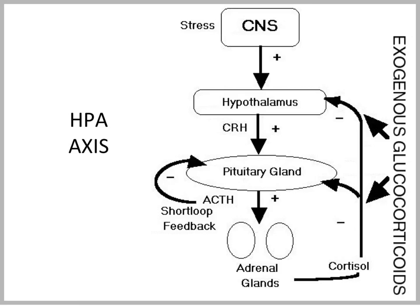The hypothalamus produces the peptide corticotrophin-releasing hormone, CRH, which has a positive effect on the pituitary gland with regards to its secretion of the peptide ACTH, adrenocorticotrophic hormone. ACTH has a positive effect on the adrenal glands — not only stimulating synthesis and secretion, but also growth, leading to hypertrophy of the glands if chronic. So this mechanism is generally a positively regulated one.